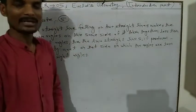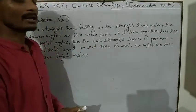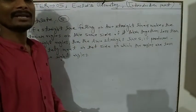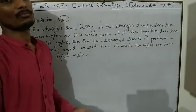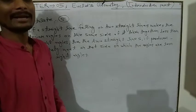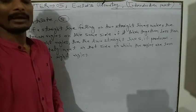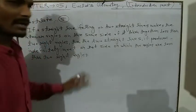Less than two right angles — which means less than 90 degrees each? Two right angles means 180 degrees: 90 plus 90.